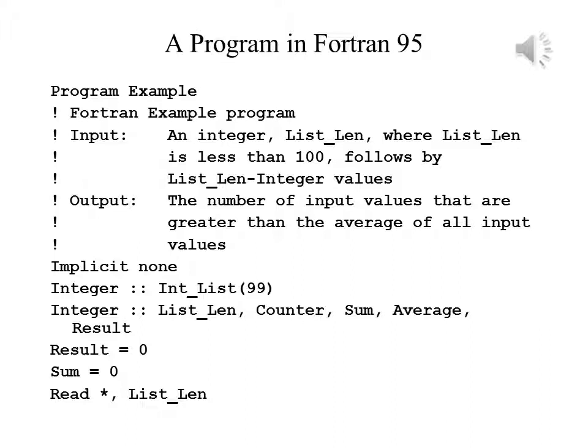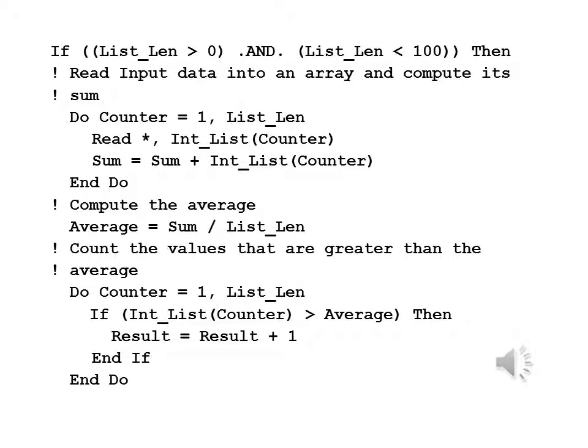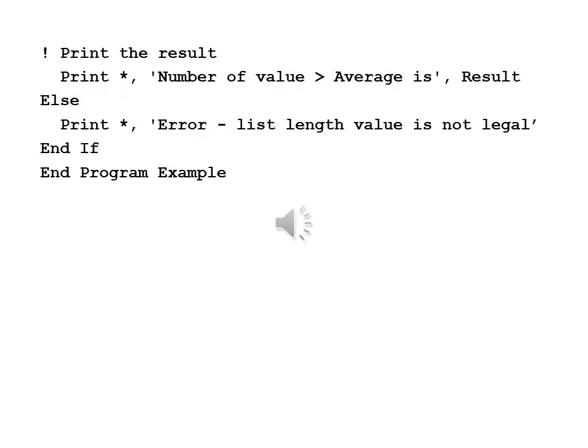Fortran 95 saw additional changes that include the use of inline comments beginning with an exclamation point. Implicit none does not allow for implicit typing, which came to be considered poor style. You can see here the introduction of end do, which is more readable than ending do loops with a statement number that had appeared in the do statement. Overall, it's clear that Fortran has evolved significantly from 1957 to 1995, and it continues to evolve.